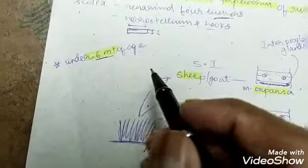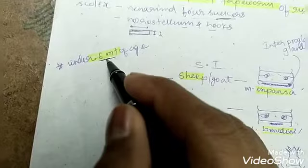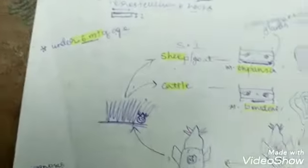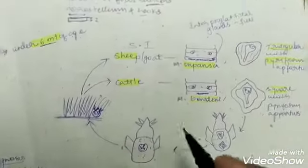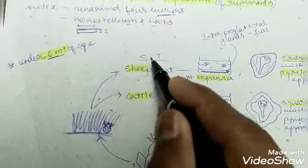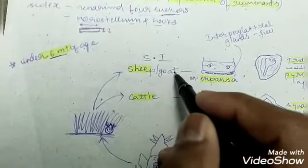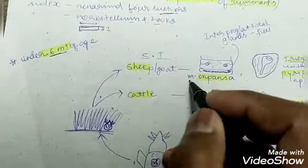Infection of Moniezia occurs in ruminants under six months of age. Now let us come to the life cycle. The adult tapeworm is present in the small intestine of sheep or goat, that is Moniezia expansa.